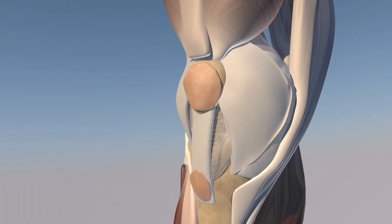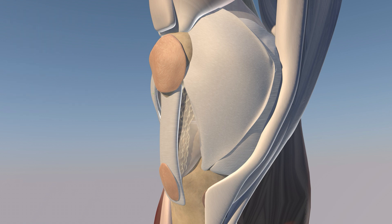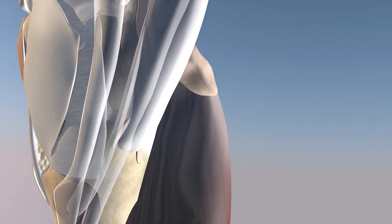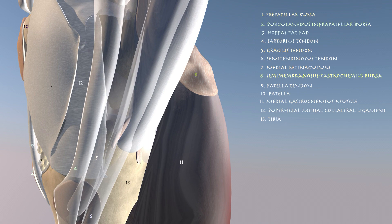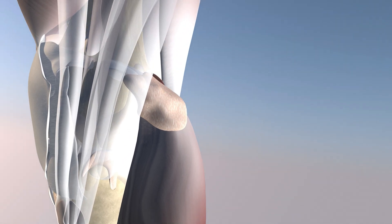Here we're going to go over some of the bursae of the knee. We can see the prepatellar bursa and also the subcutaneous infrapatellar bursa. We can also appreciate Hoffa's fat pad, the knee capsule, and the medial retinaculum. Here on the medial aspect of the knee, we can see the pes tendons inserting on the proximal medial tibia with the pes bursa underneath.